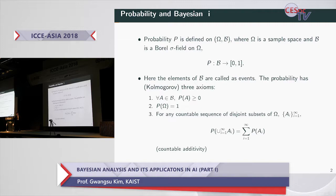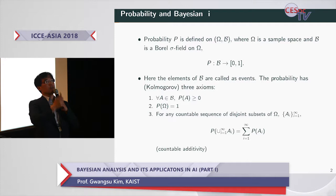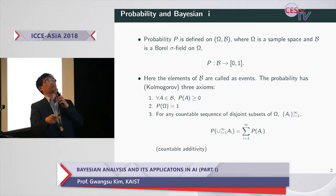This slide presents the very typical definition of probability. The probability P is defined on omega and B, where omega is a sample space and B is the sigma field on omega. P is the set function from B to values between 0 and 1. B is the set of sets, the elements of which are subsets of omega.